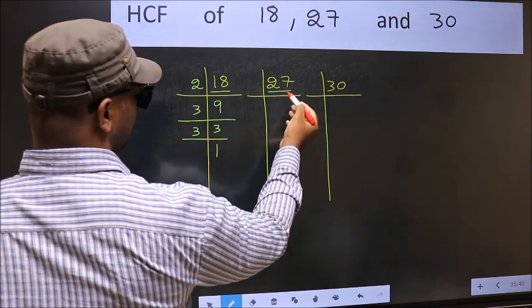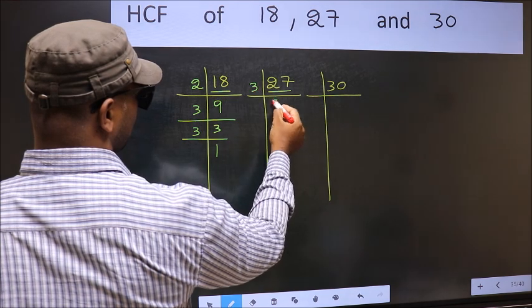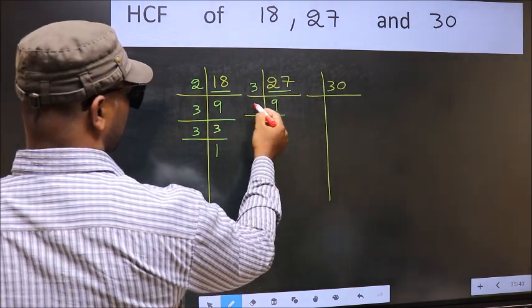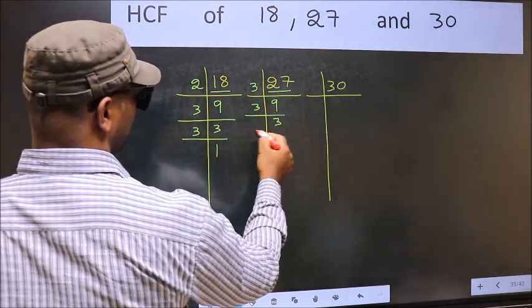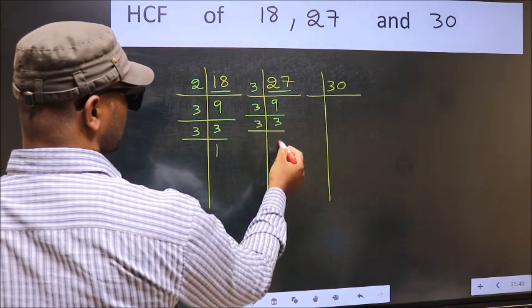Now the other number, 27. 27 is 3 times 9. 9 is 3 times 3. Now 3 is a prime number, so 3 times 1 equals 3.